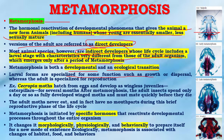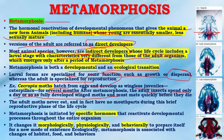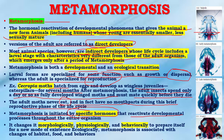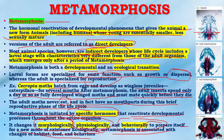Larval forms are specialized for some functions such as growth or dispersal, whereas the adult is specialized for reproduction. In Hyalophora cecropia, the moth hatches from eggs and develops as a wingless juvenile caterpillar for several months. After metamorphosis, the adult insect spends only a day or so as a fully developed winged moth and must mate quickly before it dies. The adult moth never eats and in fact has no mouthparts during this brief reproductive phase of the life cycle. Metamorphosis is initiated by specific hormones that reactivate developmental processes throughout the entire organism, changing it morphologically, physiologically, and behaviorally for new modes of existence. Ecologically, metamorphosis is associated with changes of habitat, food, and behavior.